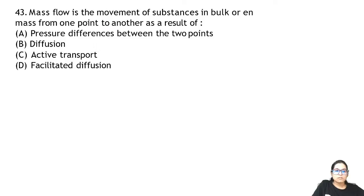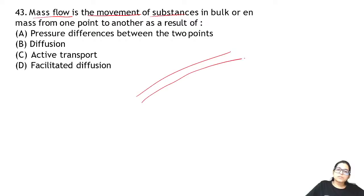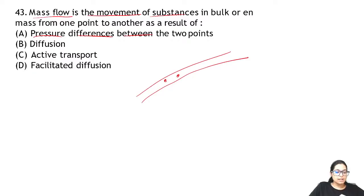Question 43: mass flow is the movement of substances — mass flow means substances move in bulk. This results in pressure differences between two points. So the answer for 43 is A. Keep reading NCRT lines, students — you are answering very well!